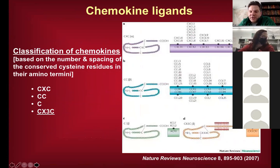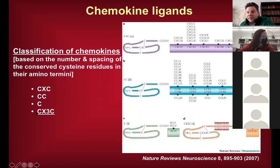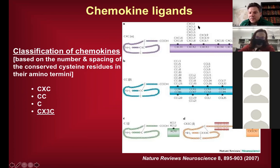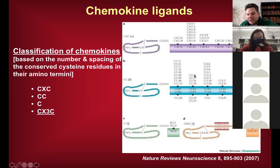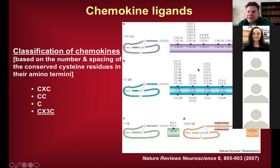These are the different chemokine receptor types, defined by the number and spacing of conserved cysteine residues in their amino termini. There are basically four patterns: CXC, CC, C, or CX3C — where CX3C is what fractalkine represents. The ligands are denoted CXCL1, CXCL2, and so on; then CCL1, CCL2, and so on for the CC class.